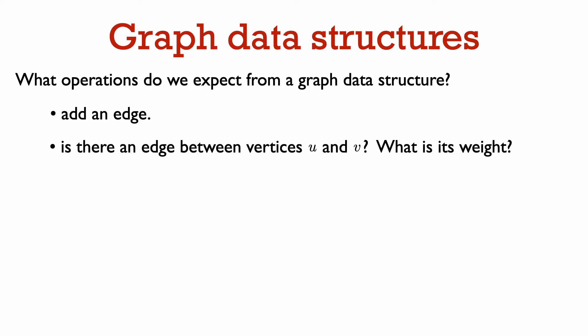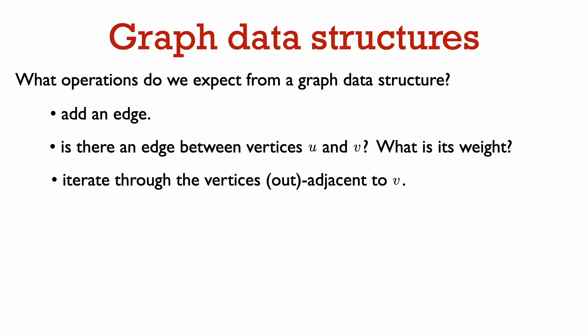Another operation is to check if there's an edge between two vertices. If the graph is weighted, we would also want to know the weight of that edge. Perhaps not as obvious, but it turns out that a critical operation for our algorithms is to iterate through all the vertices adjacent to a given vertex. I'm going to give this operation a gold star because it is actually the only operation on the graph we will need to implement all our algorithms — this has some really interesting implications we'll talk about later.